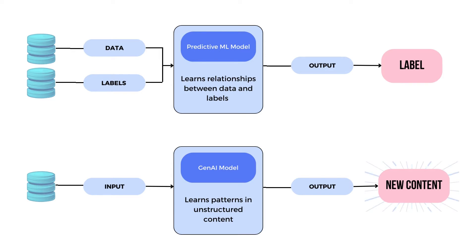This understanding is then used to make educated guesses on new data it hasn't seen before. The bottom part of the image shows something a bit different — the generative AI model. Instead of just figuring out the relationship between inputs and outputs, it digs deeper. It focuses on the complex patterns in the content, and this understanding of pattern is what gives it the power to create new and realistic content on its own.